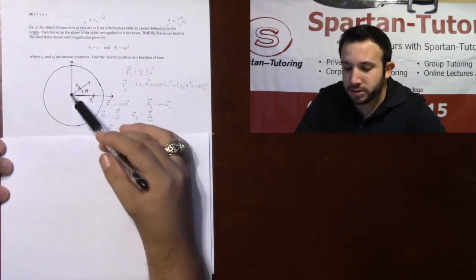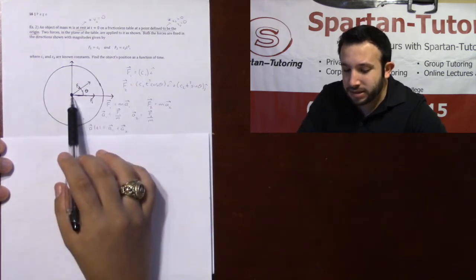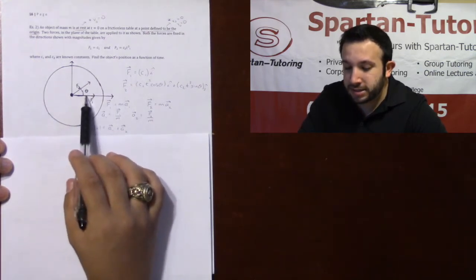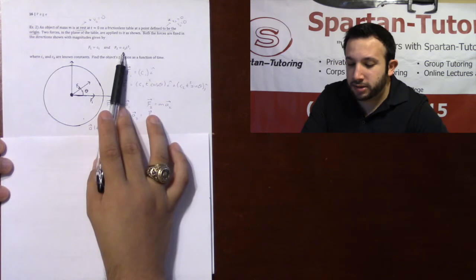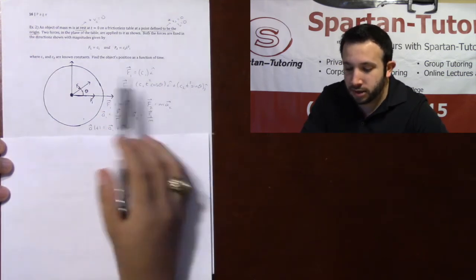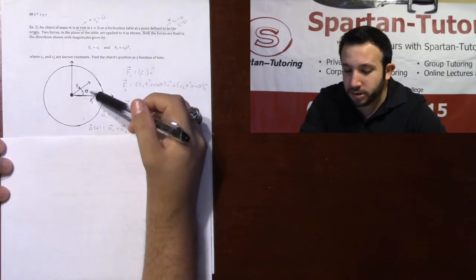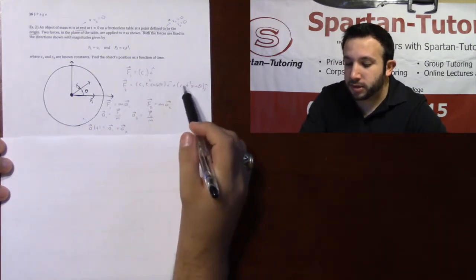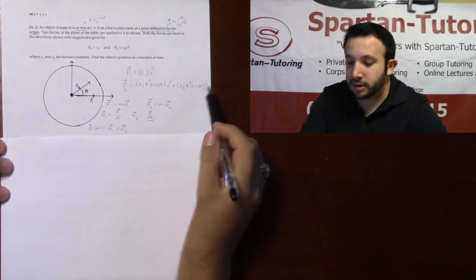Whereas f2 is at an angle. The x-component of f2 is adjacent to my angle, so that's why we're going to take the magnitude c2t-squared cosine theta in the x-direction. And then the y-component's opposite the angle, so it will be the magnitude c2t-squared sine theta.